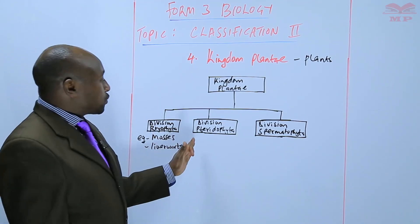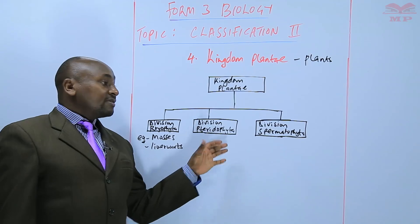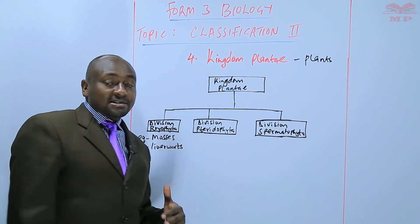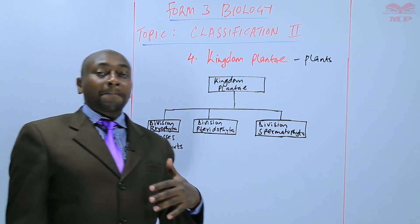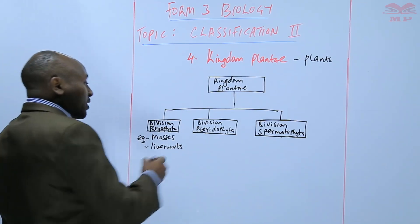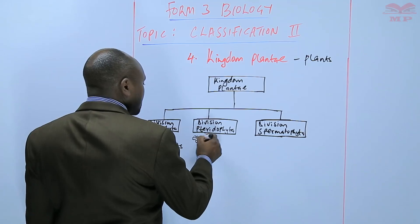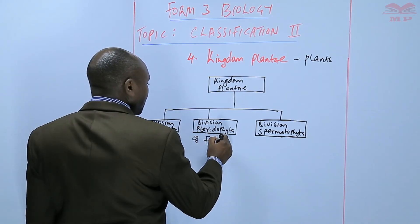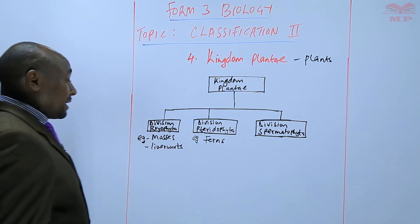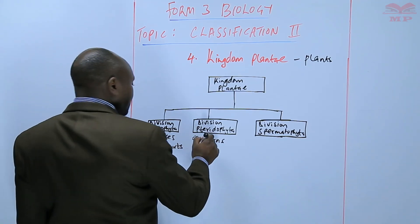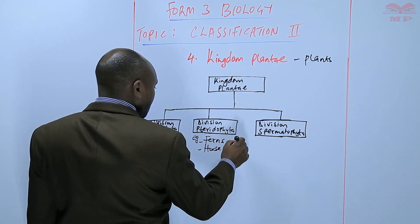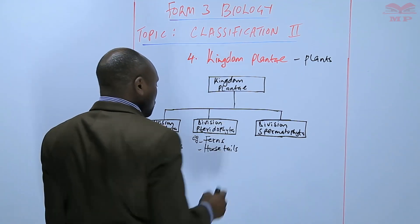In Division Pteridophyta, this division is a little bit more advanced in terms of size and complexity. Here we have members such as ferns — the fern plant — and horsetails, and so on and so forth.